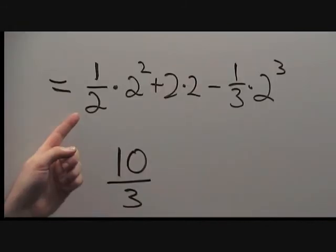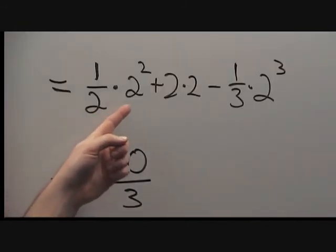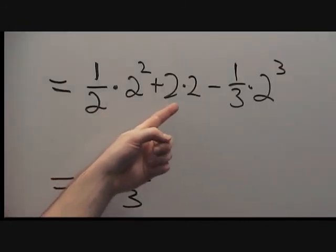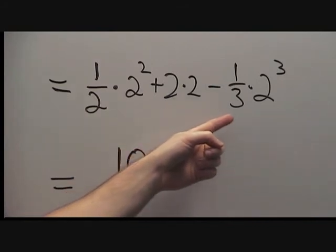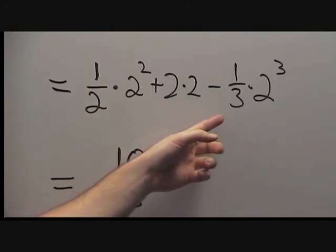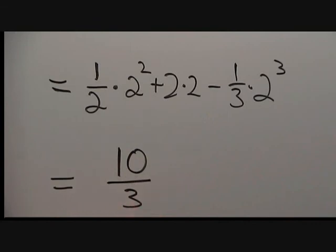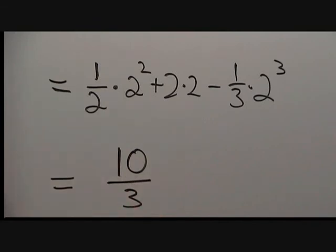And so we are left with one half times 2 squared plus 2 times 2 minus one third times 2 cubed. This all simplifies to 10 thirds. That gives our area is equal to 10 thirds.